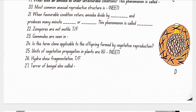Zoospores are not motile — false, they are motile. Gemmules are seen in sponge. The term clone is applicable to offspring formed by vegetative reproduction — yes. Units of vegetative propagation in plants are runner, rhizome, sucker, tuber, offset and bulb.